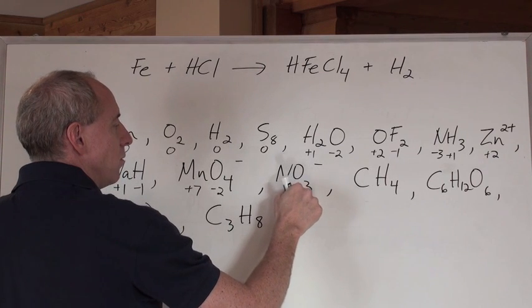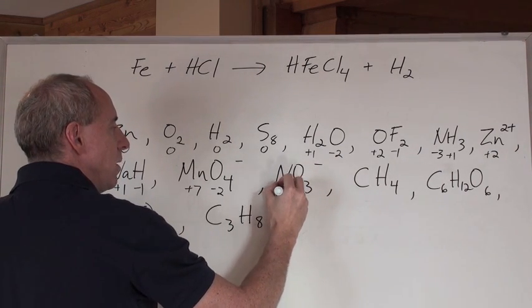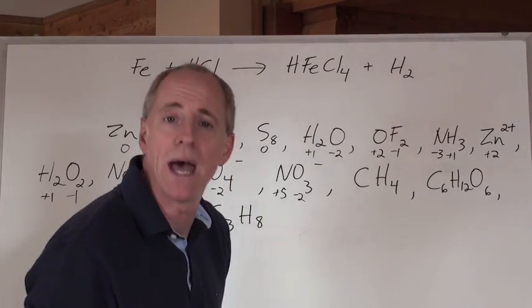Oxygen's minus two. Minus two times three is negative six. Got to keep a negative one. That's a negative six. What's the nitrogen have to be? Plus five. Make sense? You bet.